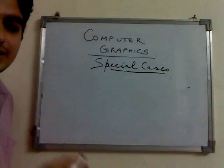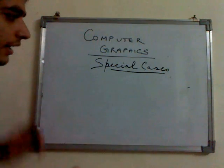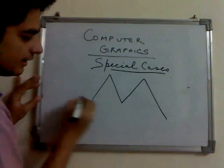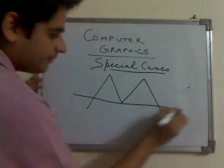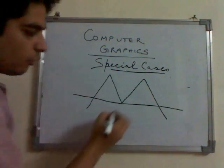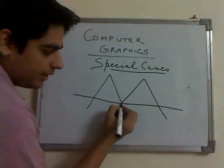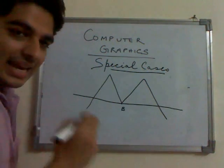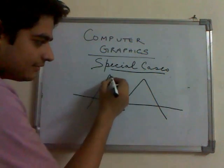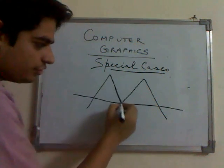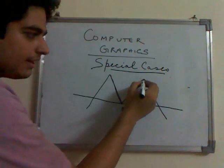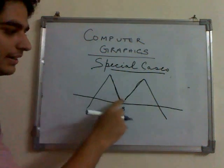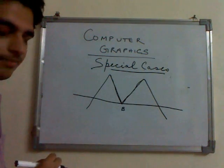Consider this polygon and consider this as a scan line. Now at point B, the scan line intersects with this edge and this edge. So it is intersecting with two edges at the same time.